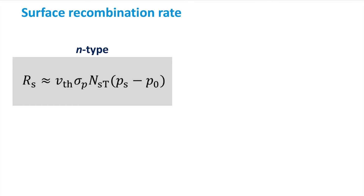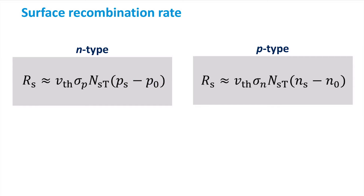For an n-type semiconductor, the surface recombination rate is given by the following expression. The thermal velocity and capture cross-section for holes form the reach of the trap, like we have seen before for SRH recombination. N_ST is the surface trap density given in the number of traps per unit area. P_S is the hole concentration at the surface, and P_0 is the thermal equilibrium hole concentration in the semiconductor. Together, they form the excess hole concentration at the surface.